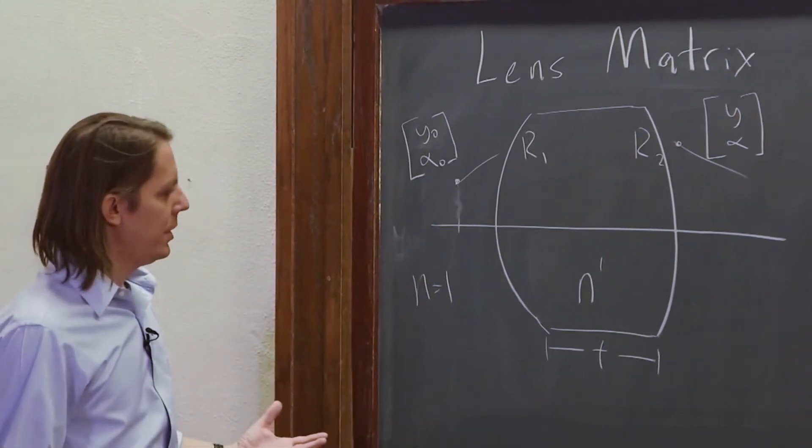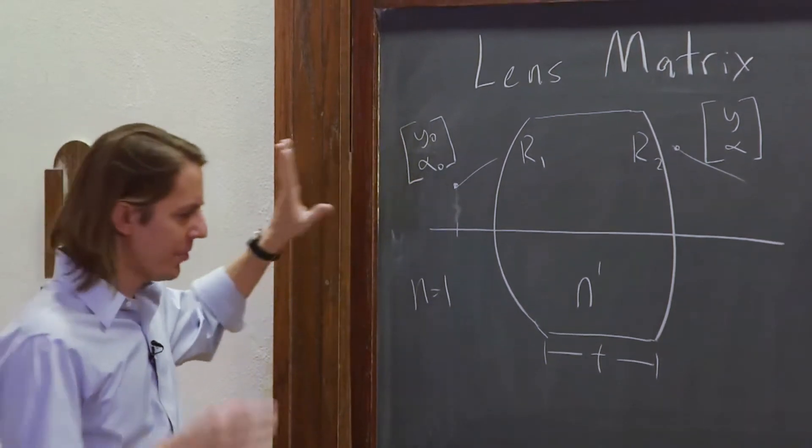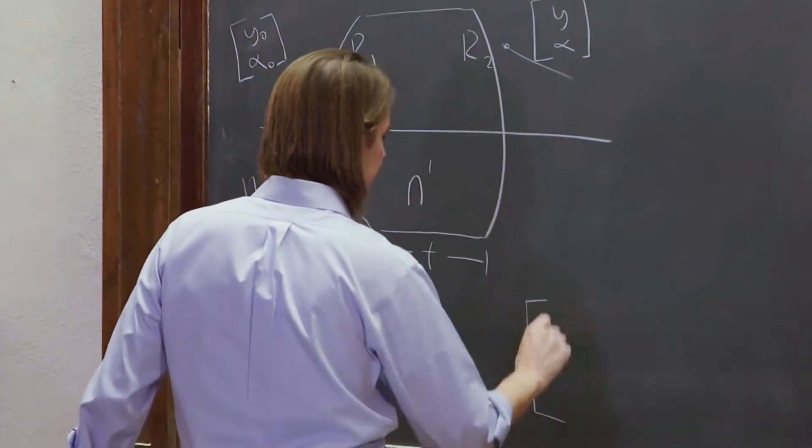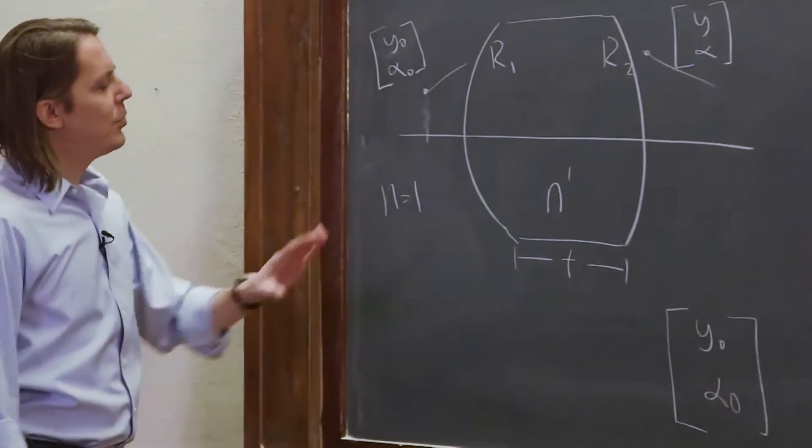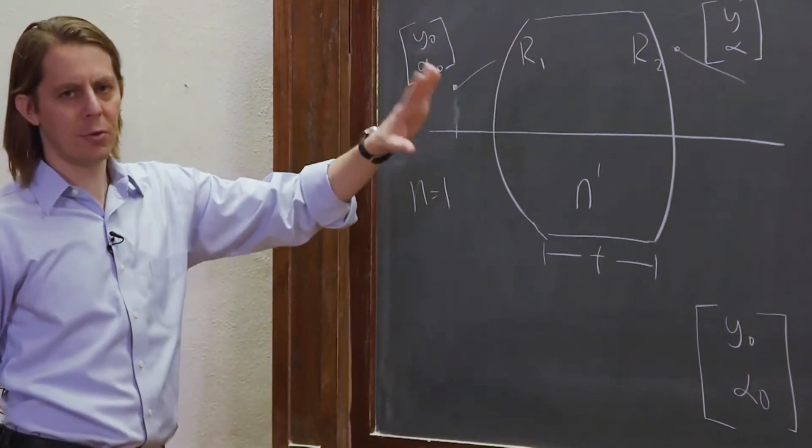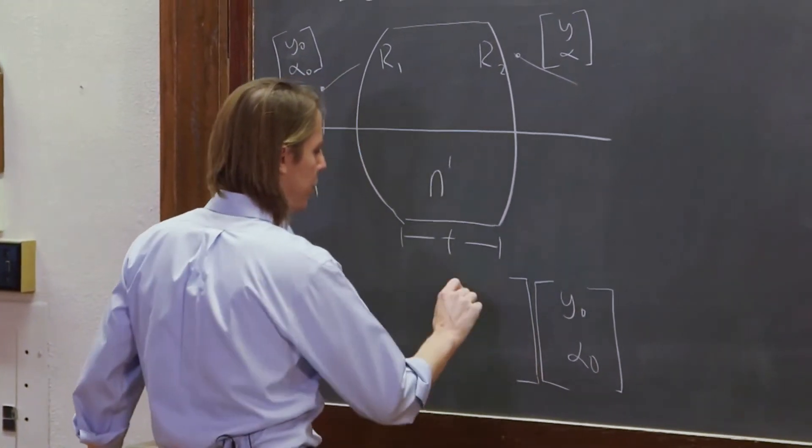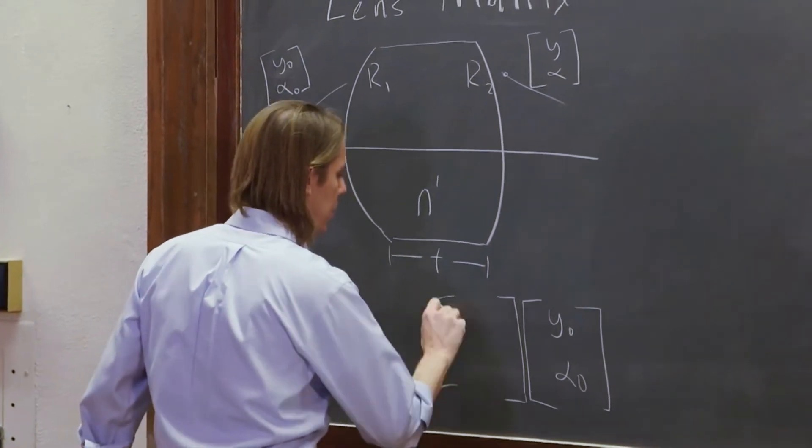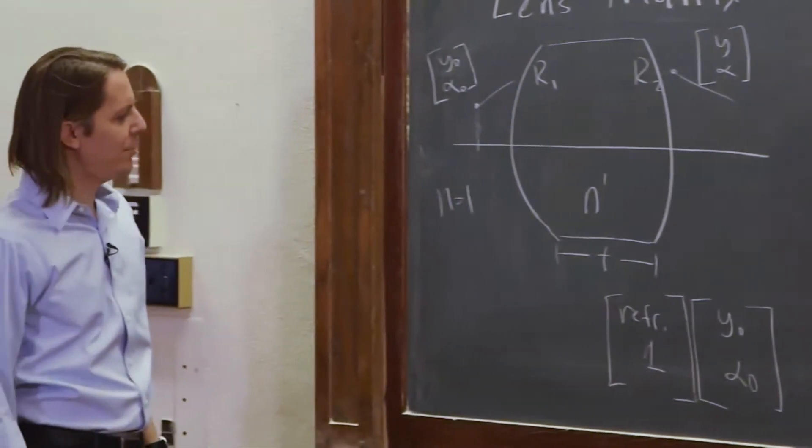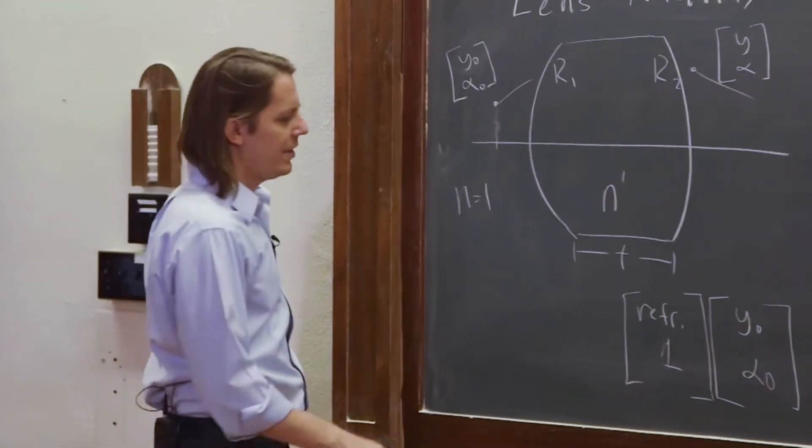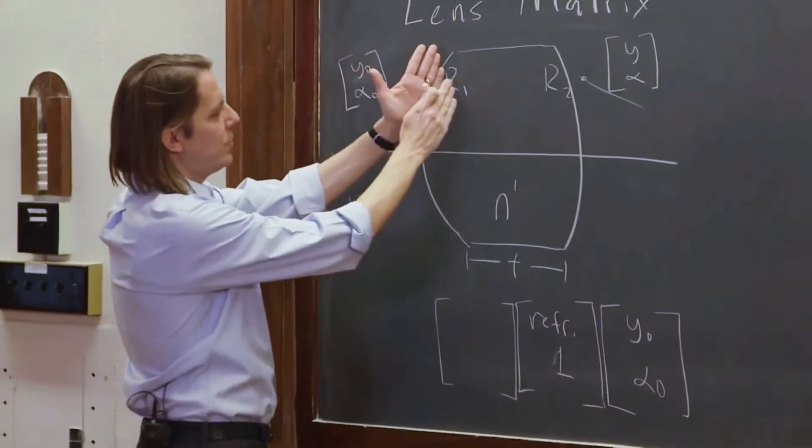Mathematically what you do is first you write the state of your light, your ray vector that you start with, and usually it's better to write it over here: Y-naught alpha-naught. And then you multiply it by the matrices for the different operations in the order they happen. So the first thing you want to multiply it by is this refraction, refraction one. But that would be the first refraction, and then what would happen next is then the ray would translate. That would be translation T.